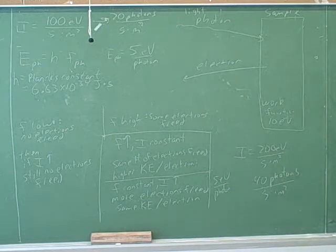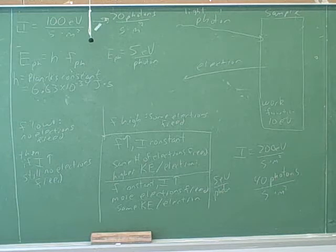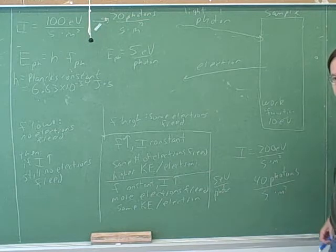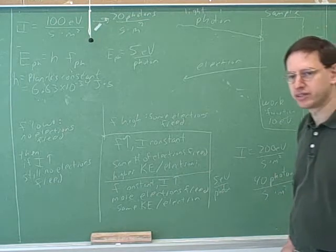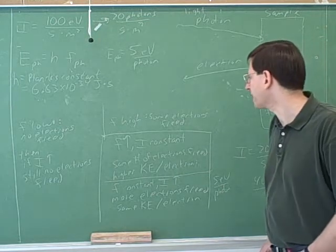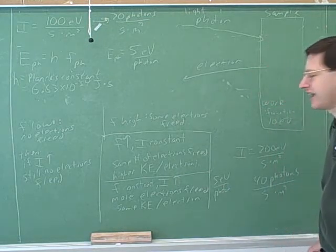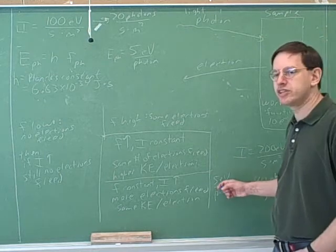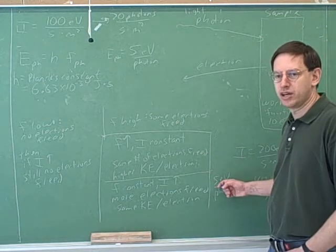It's important to have that interpretation in your mind for when you're solving problems — you need it for a lot of exam problems. Increasing the intensity increases the number of photons per second per square meter. And we can see how that happened here.